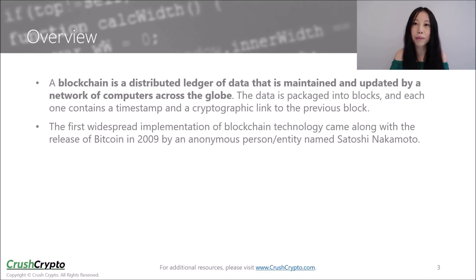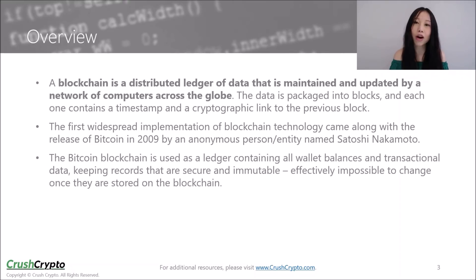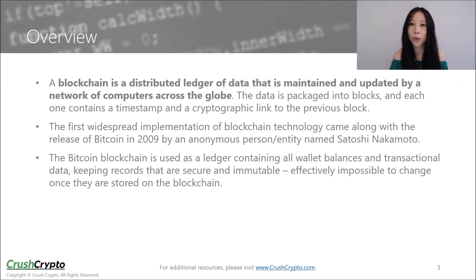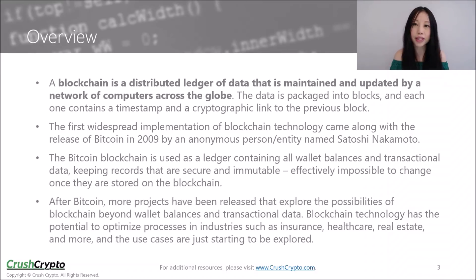The Bitcoin blockchain is used as a ledger containing all wallet balances and transactional data, keeping records that are secure and immutable — effectively impossible to change once they are stored on the blockchain. After Bitcoin, more projects have been released that explore the possibilities of blockchain beyond wallet balances and transactional data.